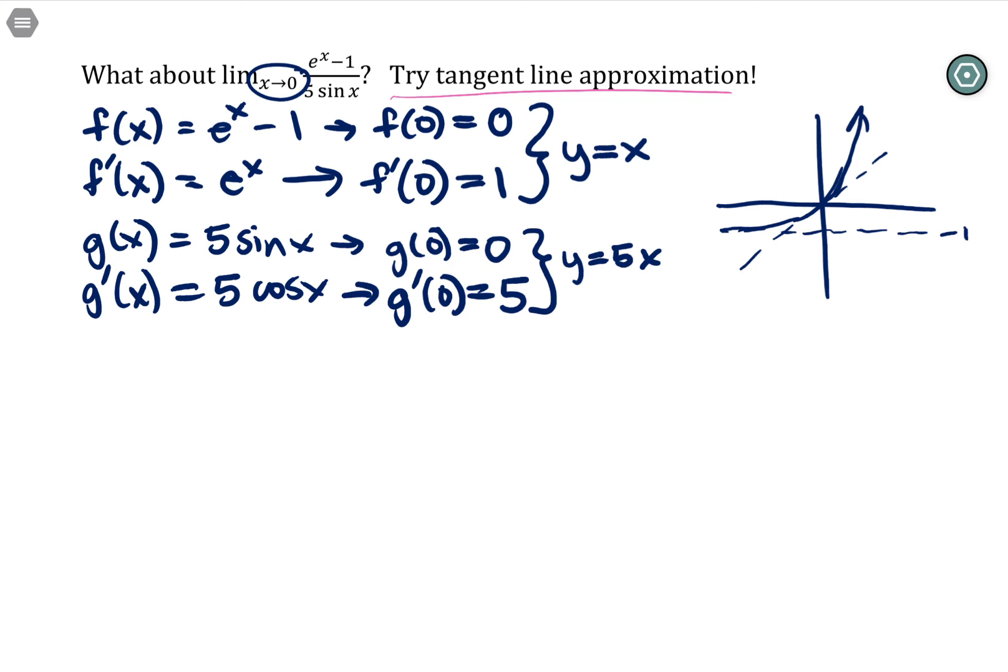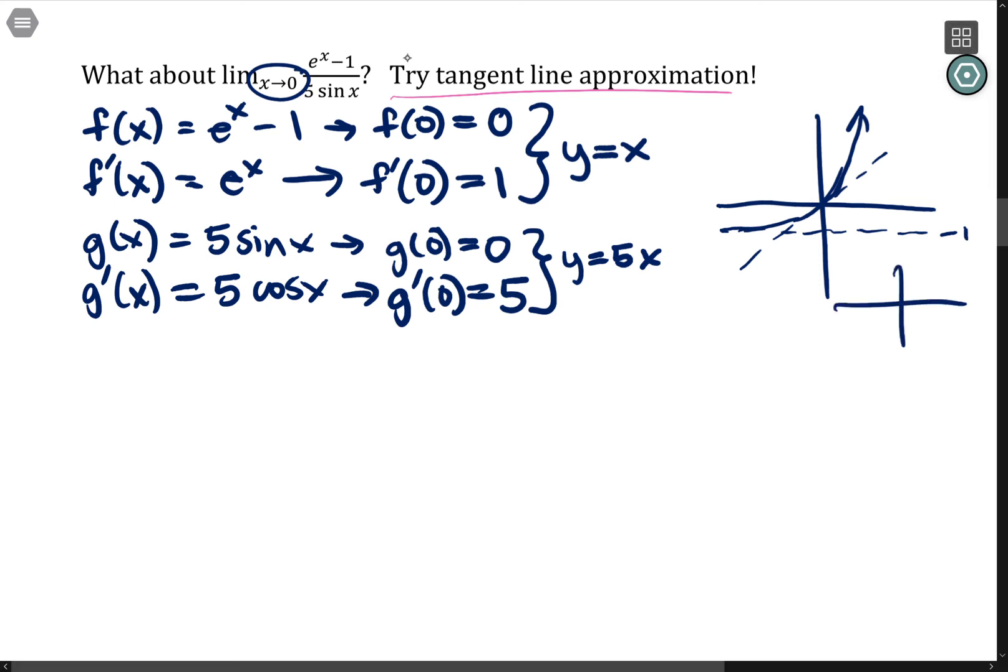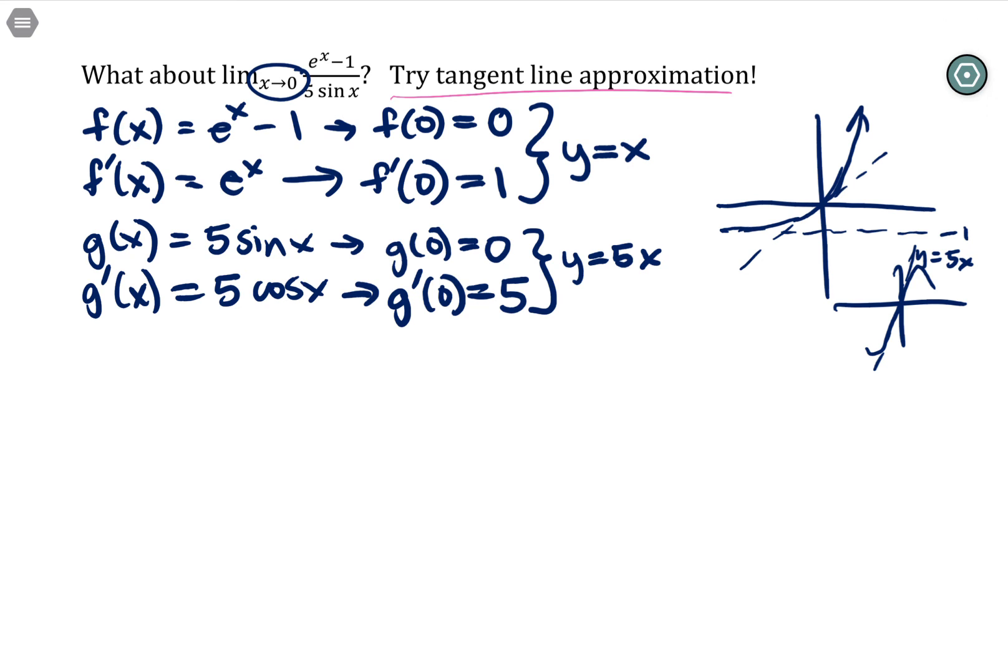So basically, if I zoomed in far enough on this picture, I would not be able to distinguish between the curve and the tangent line. They become identical when x is really close to zero. And the same idea with the 5sinx, these big sine 5sinx, so it's pretty steep, it's going like this. And the tangent line is y = 5x, fairly steep. If you zoom in enough, you're really close to x equals zero, the tangent line is going to be identical to the curve, you're not going to be able to distinguish between them.